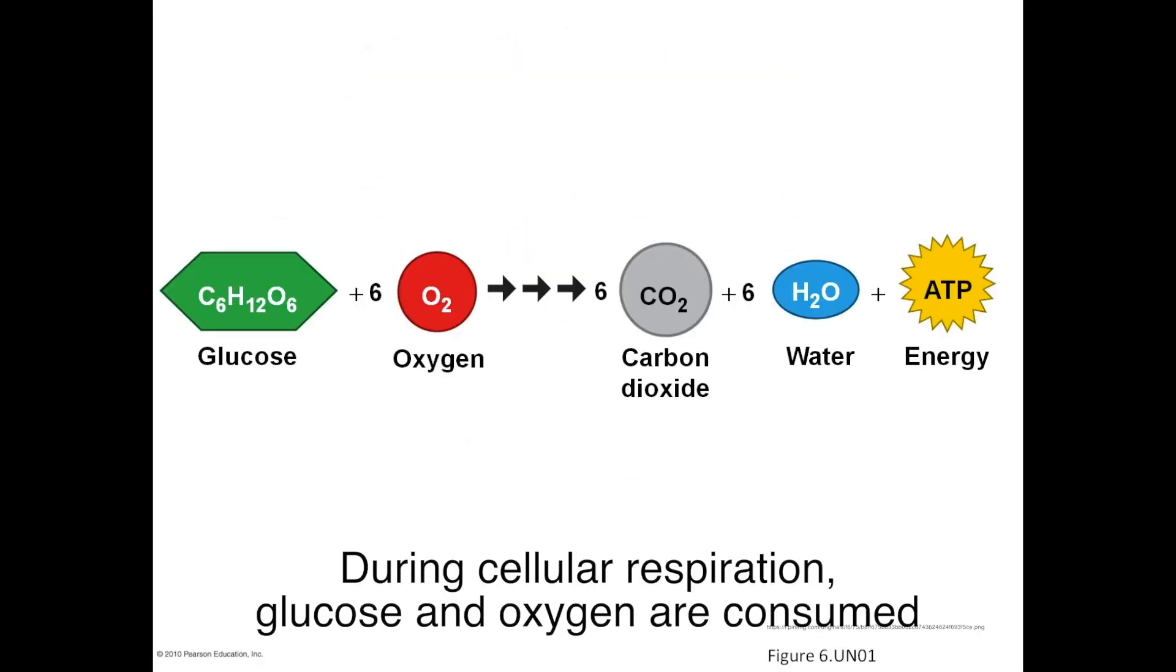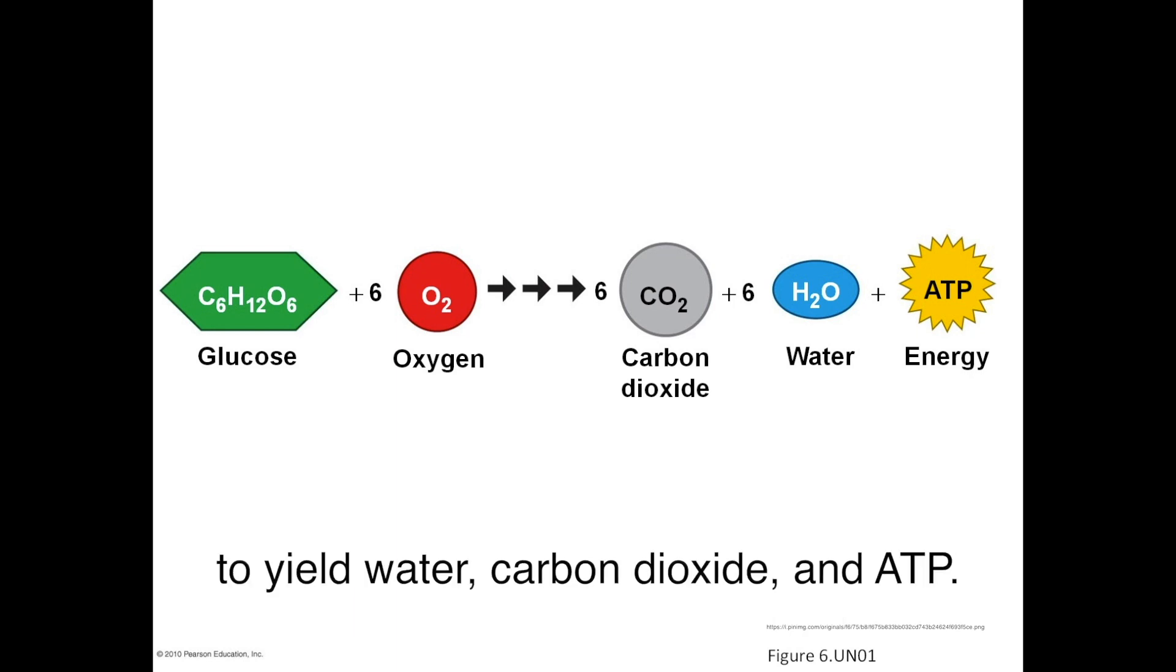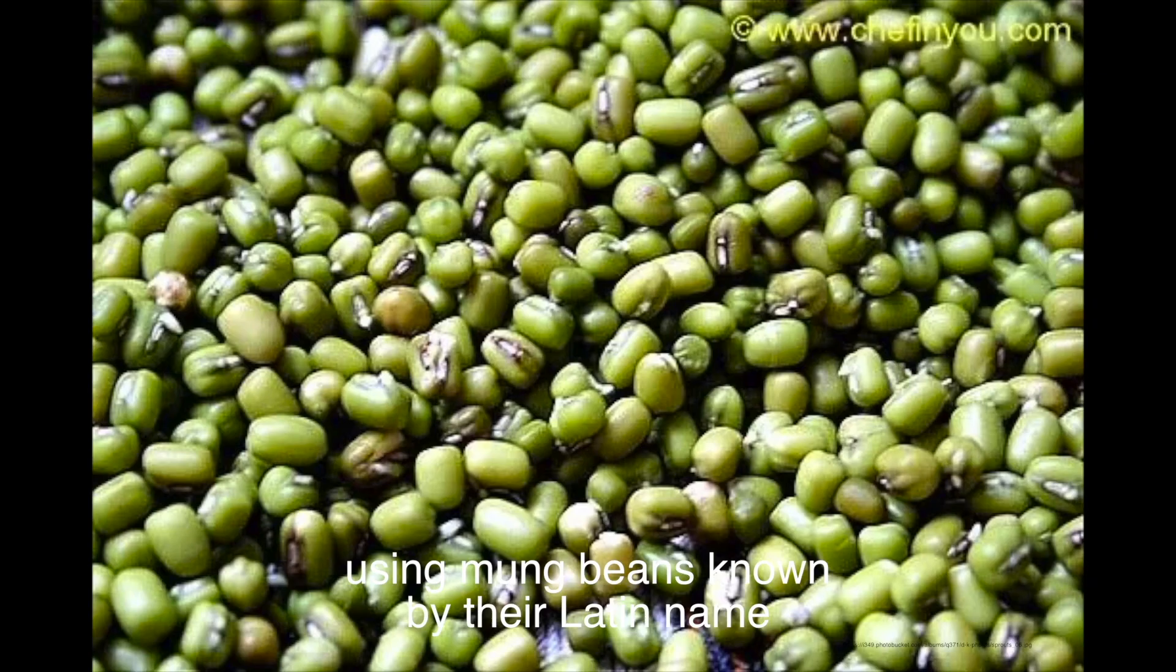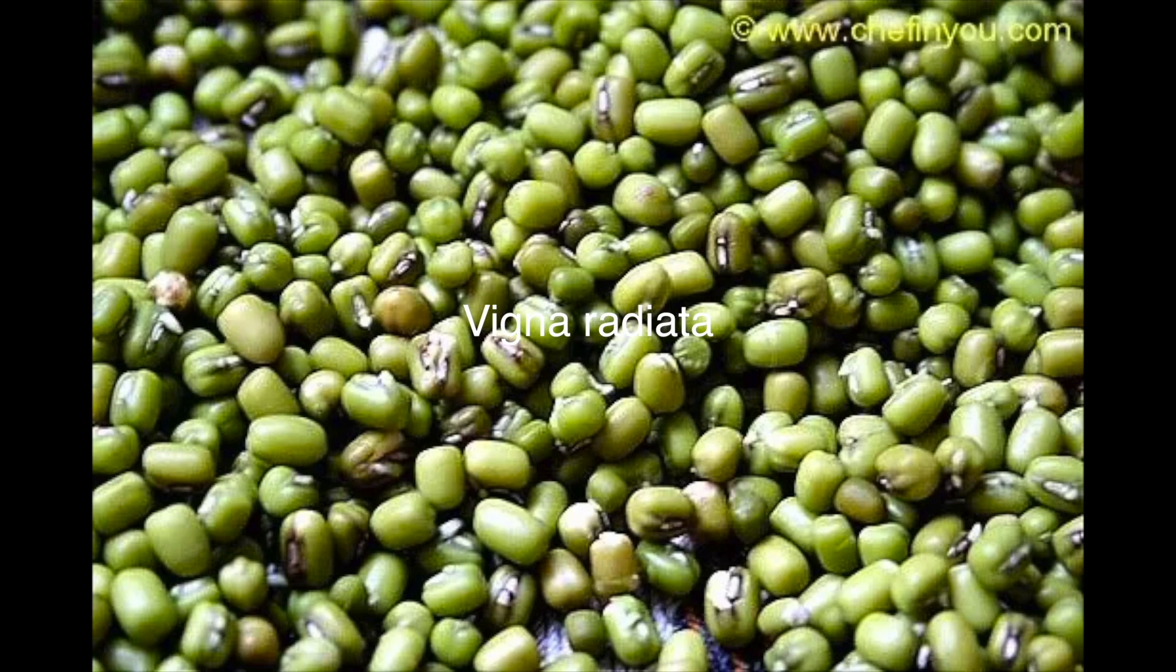During cellular respiration, glucose and oxygen are consumed to yield water, carbon dioxide, and ATP, the energy that fuels cell metabolism. Through this video you will be able to visualize this process using mung beans, known by their Latin name of Vigna radiata.